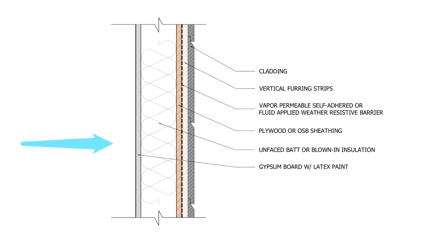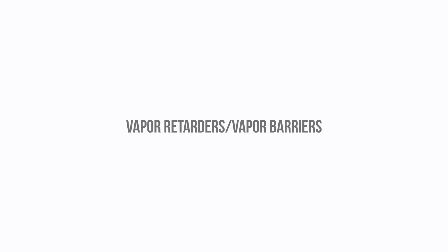Materials with a higher perm rating allow for faster vapor transmission, while materials with a lower perm rating slow or virtually halt vapor transmission, and these materials are called vapor retarders or vapor barriers.